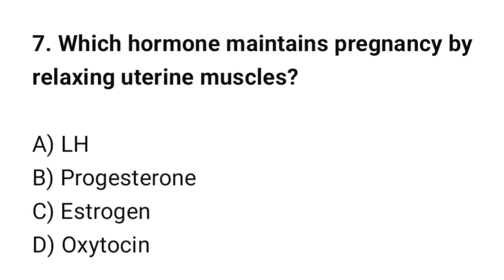Question No. 7: Which hormone maintains pregnancy by relaxing uterine muscles? The correct option is B. Progesterone.